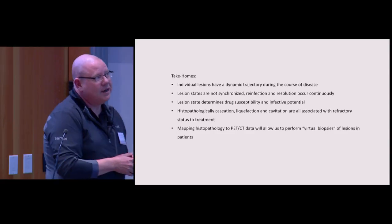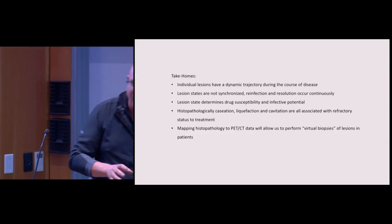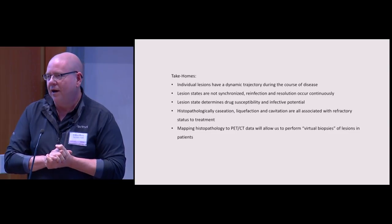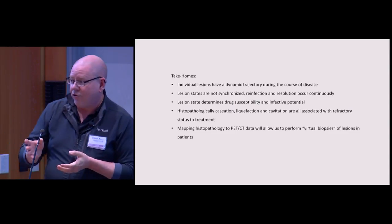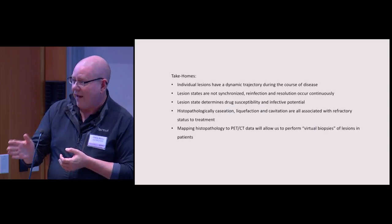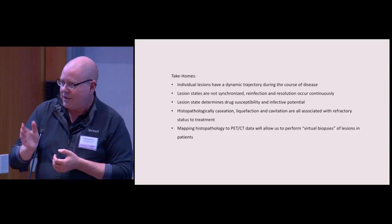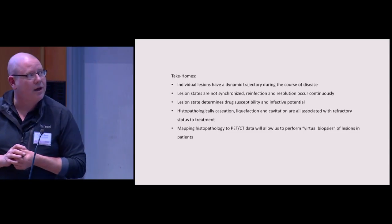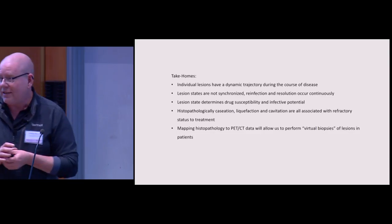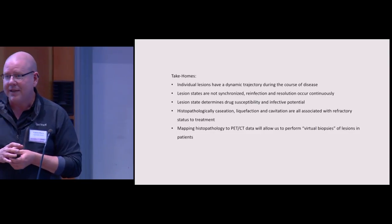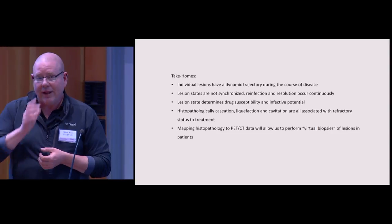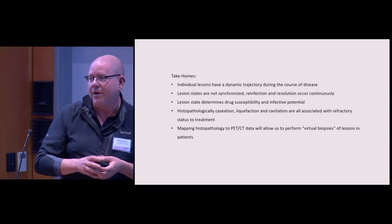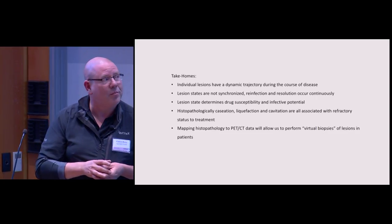Just a few take-homes. If you don't remember anything else from this talk, remember that individual lesions in a patient or in a monkey, not so much in a mouse, really have a dynamic trajectory that's determined by the immunologic age and history of that lesion. Lesions at an older time point react differently than lesions at a younger time point. These lesion states are not synchronized within animals. Even though we infect them all on the same day, some lesions develop quickly and others don't. Some are secondary lesions to the primary infection, and I suspect some just develop more slowly.